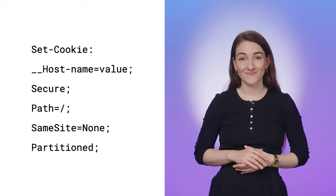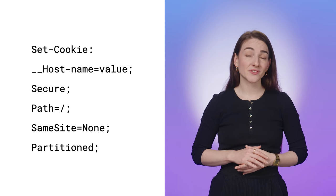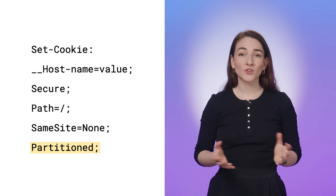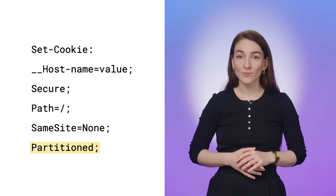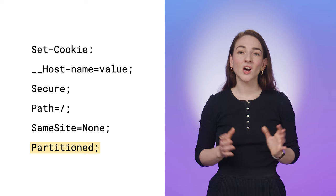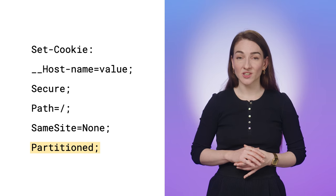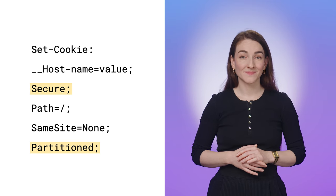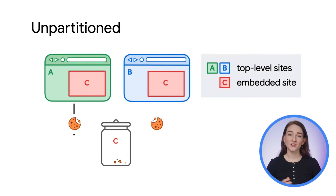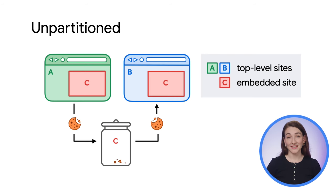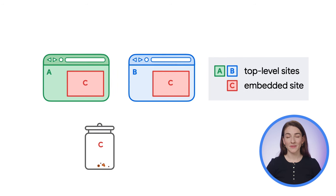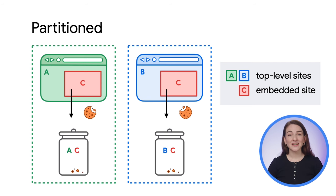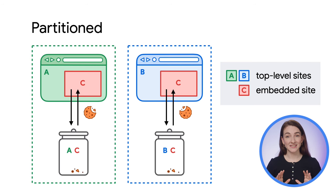CHIPS introduces a new cookie attribute, 'partitioned', to support cross-site cookies that are partitioned by top-level context. All partitioned cookies must also be set with the Secure attribute to ensure they are only set and sent over secure protocols. A partitioned third-party cookie is tied to the top-level site where it's initially set and cannot be accessed from elsewhere. This way, cookies set by a third-party service can only be read within the same embedded context of the top-level site where they were initially set.